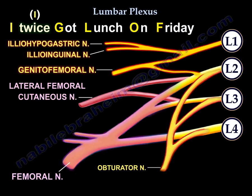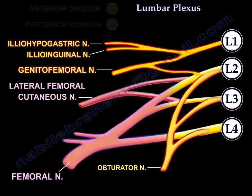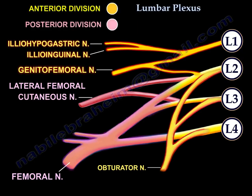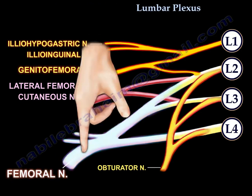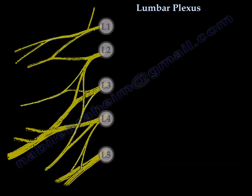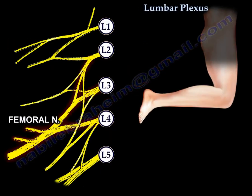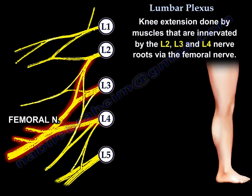These are the 6 branches. This diagram will also show you the anterior division and the posterior division. The femoral nerve is responsible for knee extension through muscles supplied by L2, L3, and L4 nerve roots.